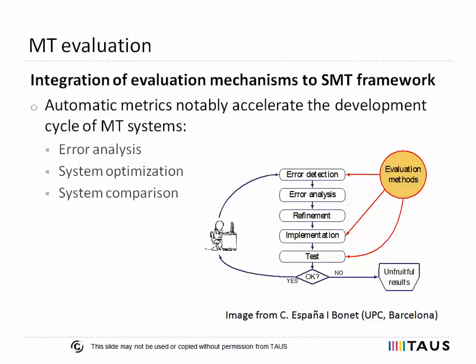Automatic metrics are used in the majority of modern machine translation systems. The main reason is that they are cost-effective in comparison with human evaluation. Automatic metrics integrated into translation training frameworks accelerate development of machine translation systems to aid error analysis, machine translation engine optimization, and comparison of machine translation systems. Automatic or semi-automatic error analysis, carried out during post-editing or during the fine-tuning of statistical machine translation systems, is a popular method to estimate the quality of produced translations.